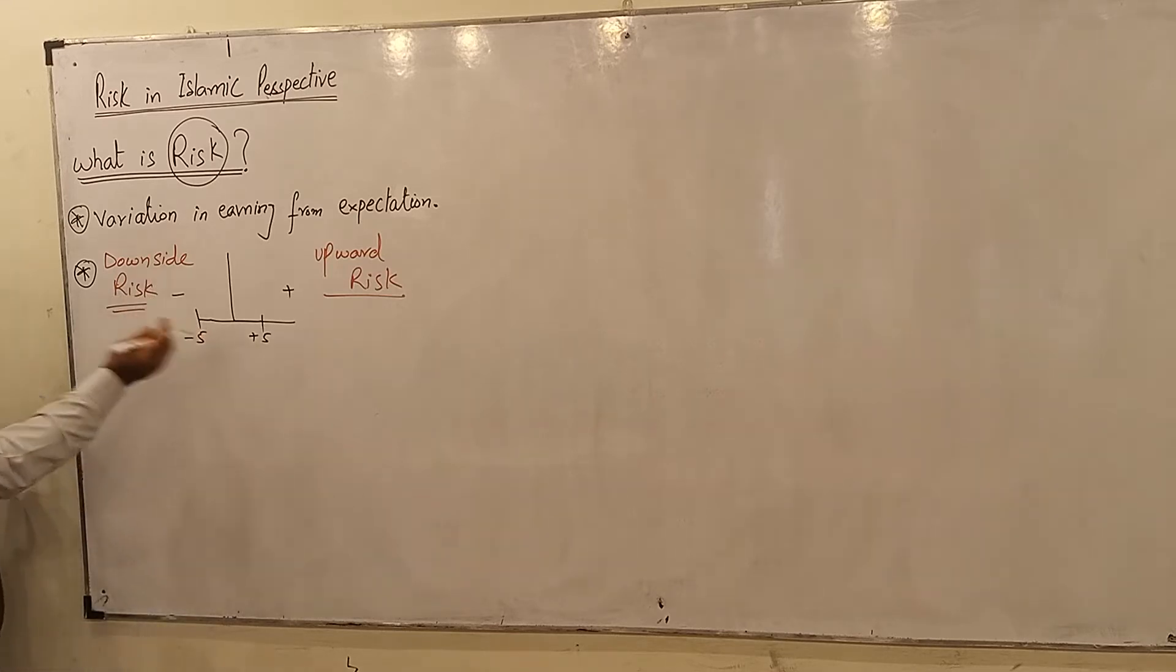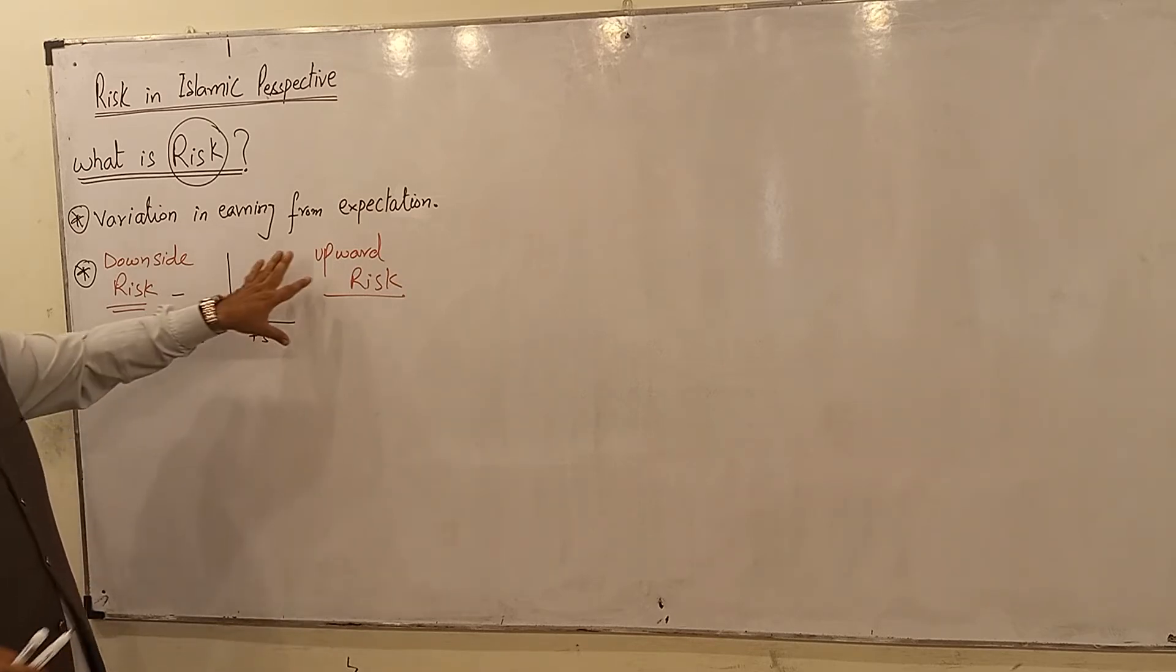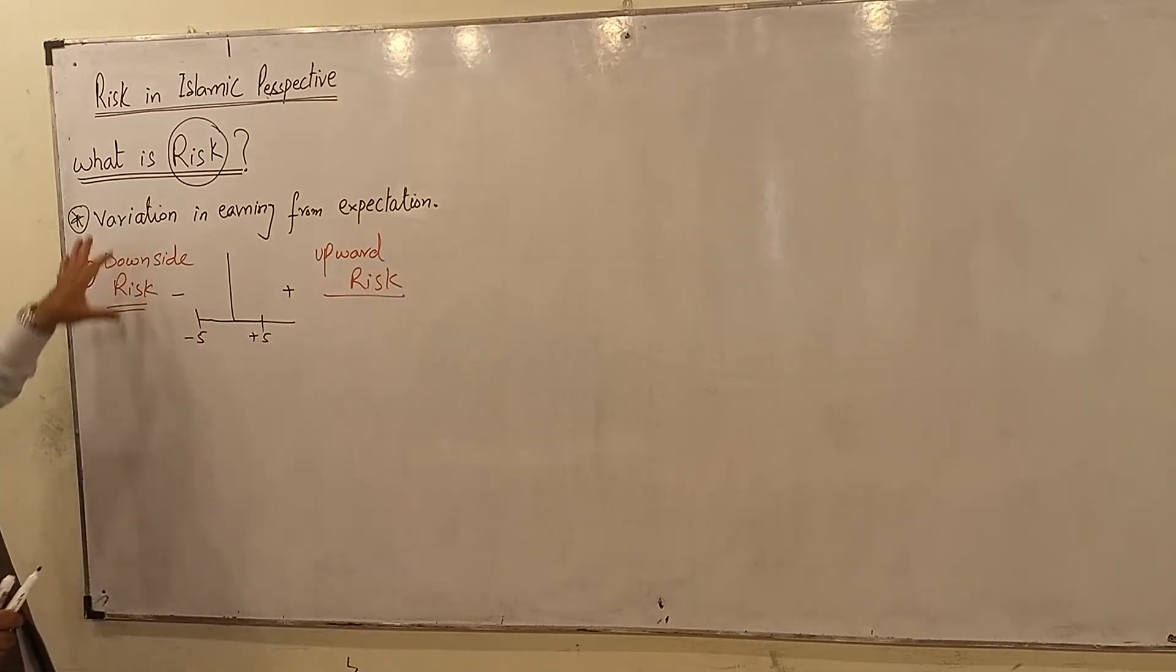So if it moves toward the negative side, they divide risk usually into two ways: upward and downside.